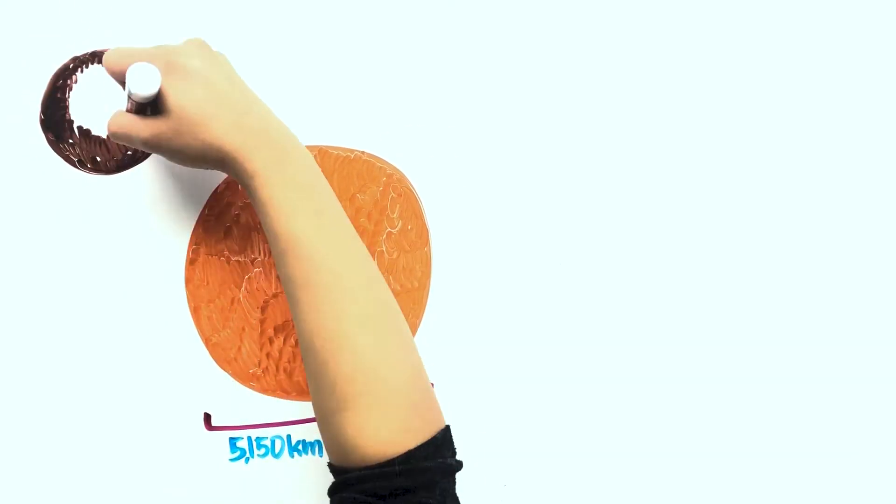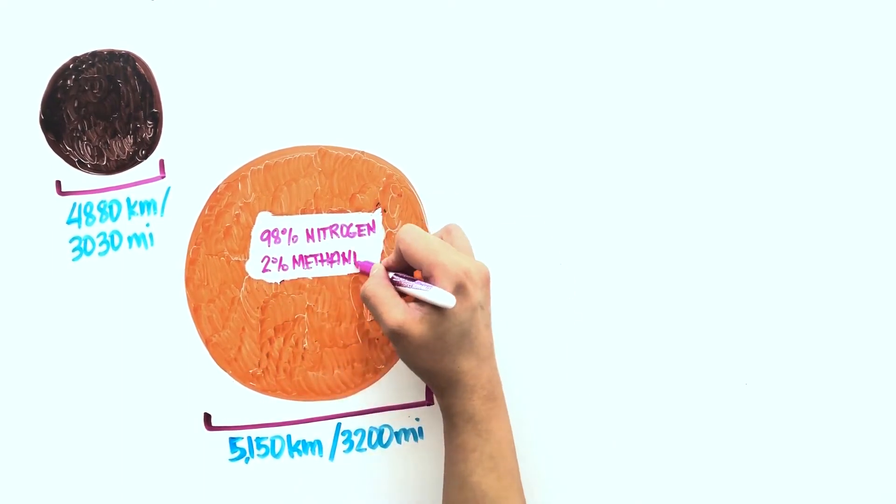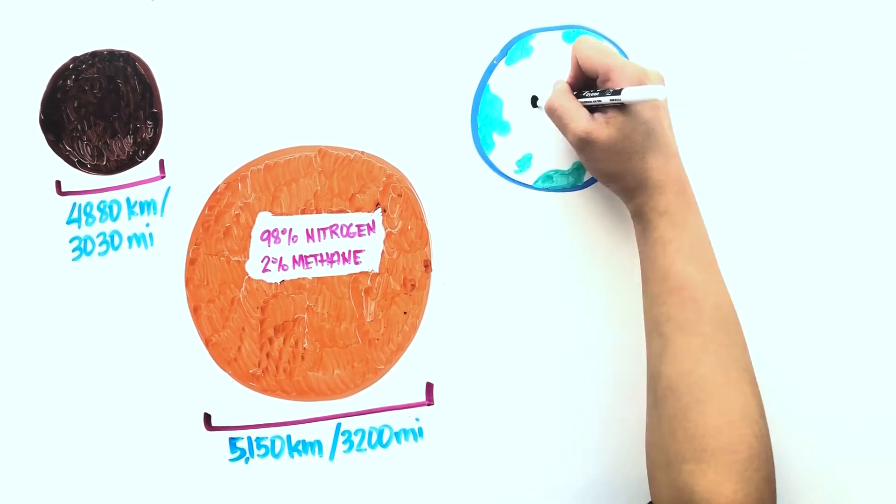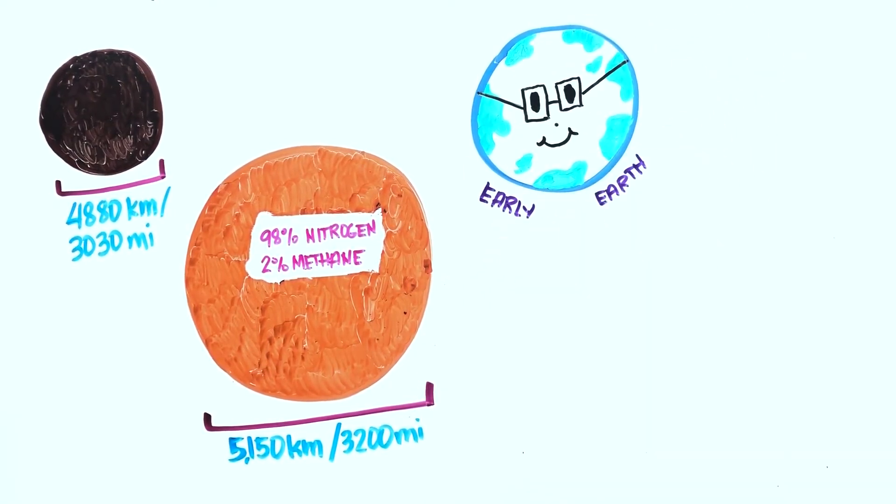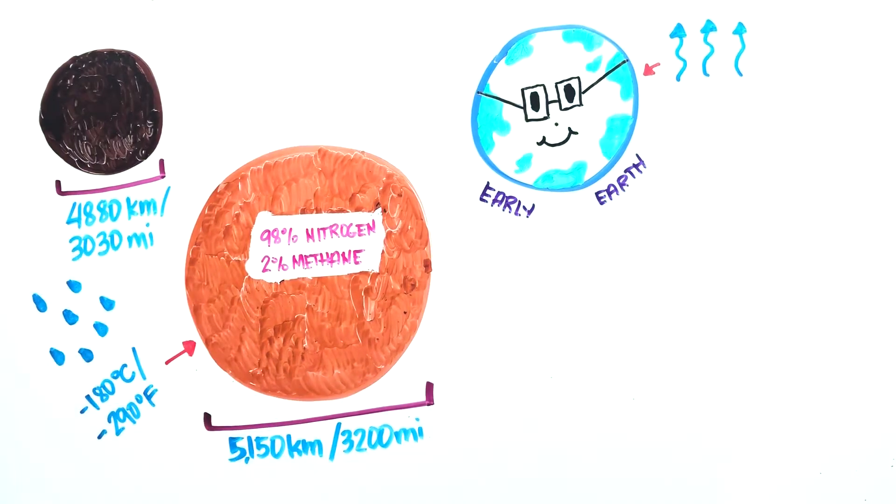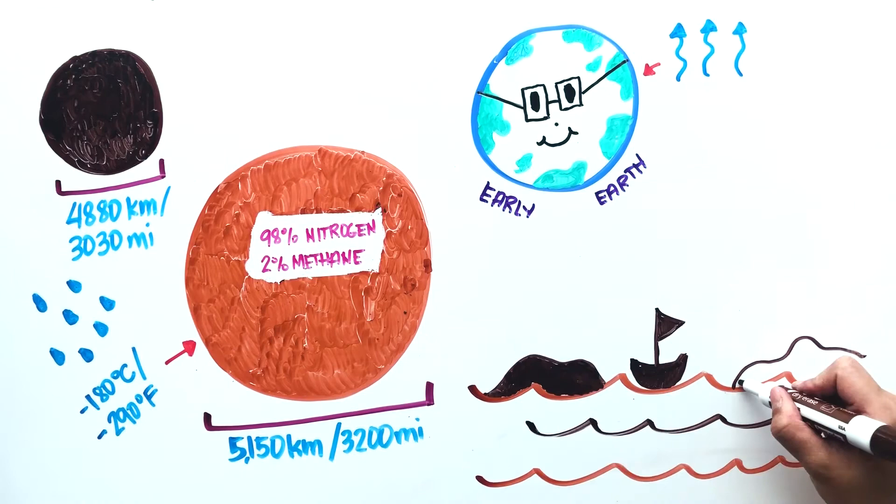Titan is the second largest moon in our solar system and is bigger than the planet Mercury. It is made up of 98% nitrogen and the rest is mostly methane, similar to the elements that made up Earth during its early formation. On Earth methane is a gas, but on Titan it's cold enough to have methane in its liquid state. There are methane lakes and seas, and within these seas are islands sticking above the waves.